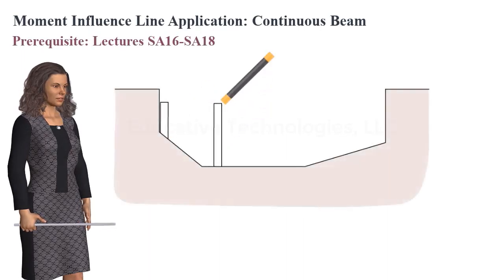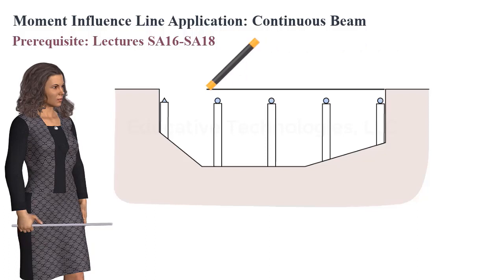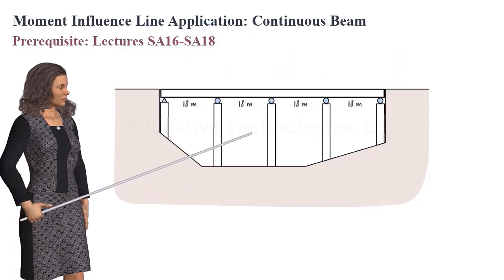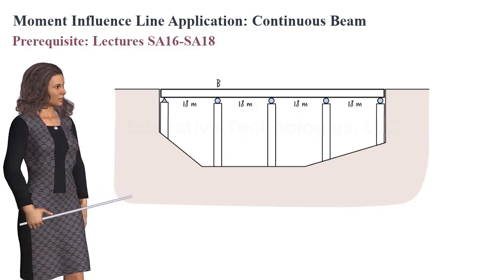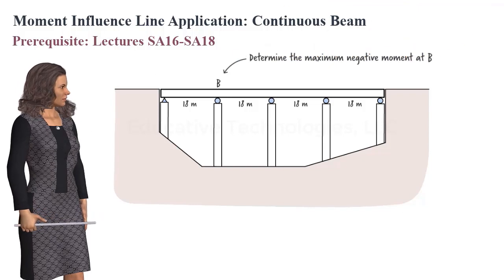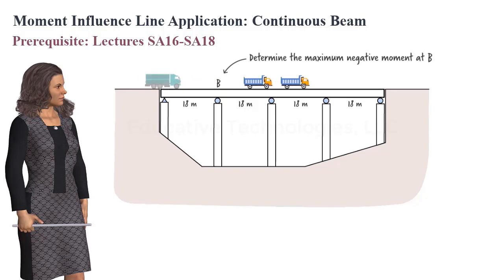In this session, we're going to answer a structural analysis question asked by a student. Consider a highway bridge consisting of four spans, each having a length of 18 meters. How do we determine the maximum negative bending moment at support B? Let's limit our discussion to the analysis of the beam due to vehicular loads only.